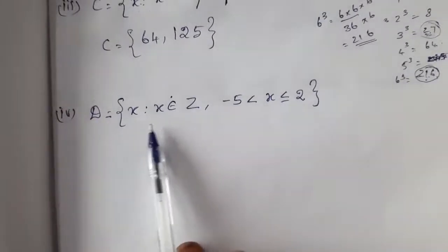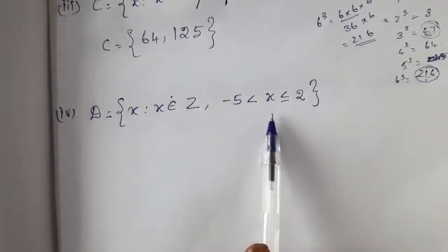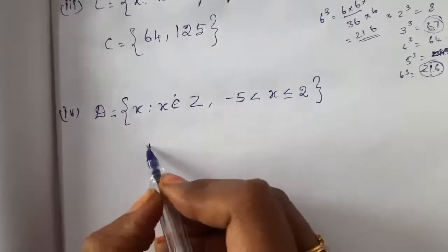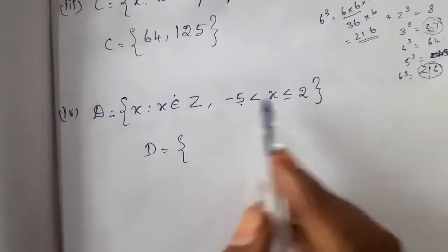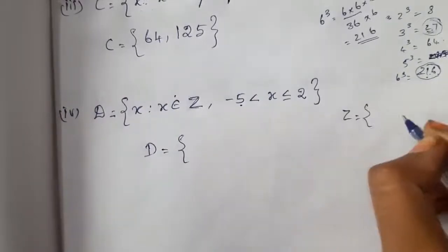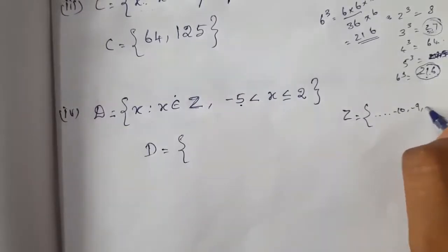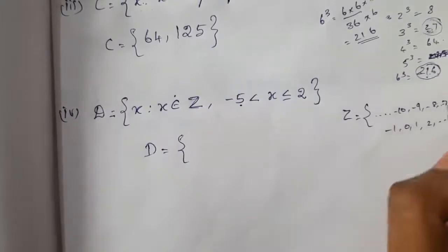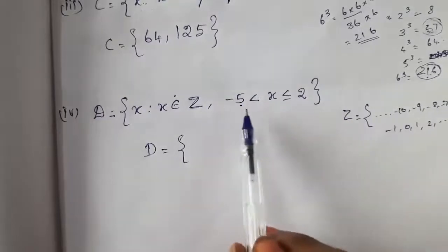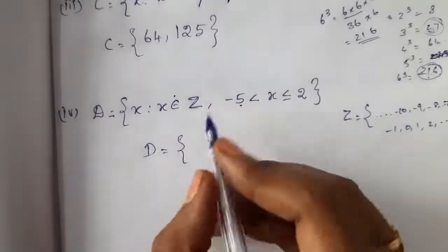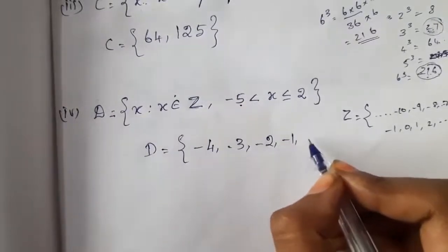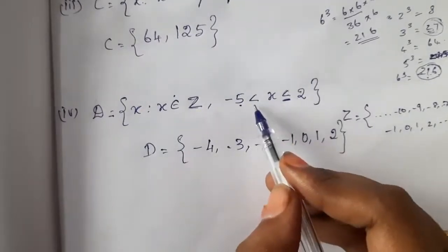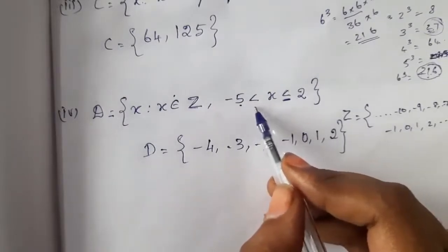Set D = {x | x ∈ ℤ, −5 < x ≤ 2}. This involves integers (ℤ) — integers include negative numbers, zero, and positive numbers like ..., −10, −9, ..., −1, 0, 1, 2, 3, ... Our set starts from just above −5. Since they did not include equal to on the left side, we do not use −5. But they gave ≤ 2 on the right, so we include 2. So D = {−4, −3, −2, −1, 0, 1, 2}.